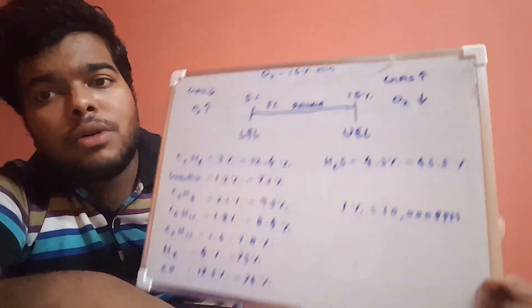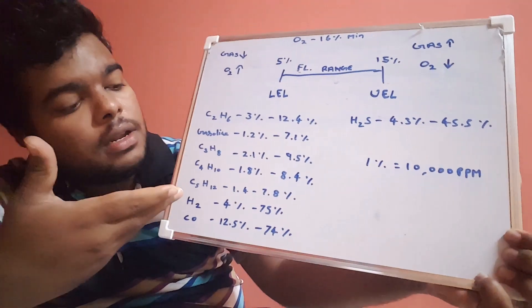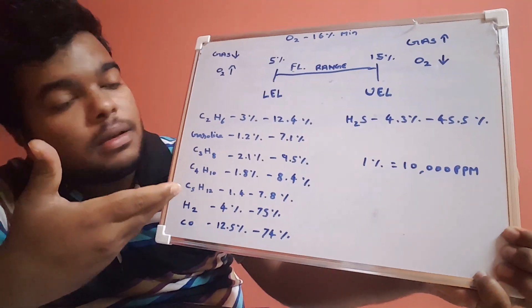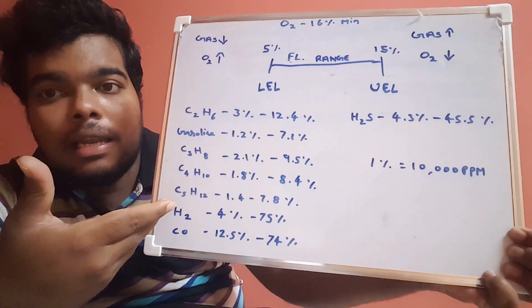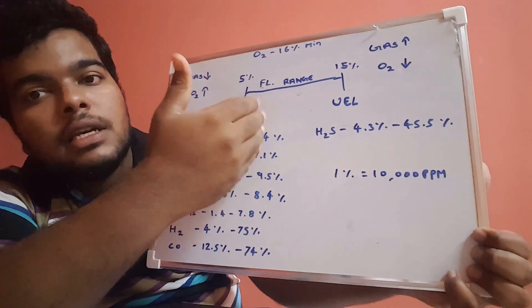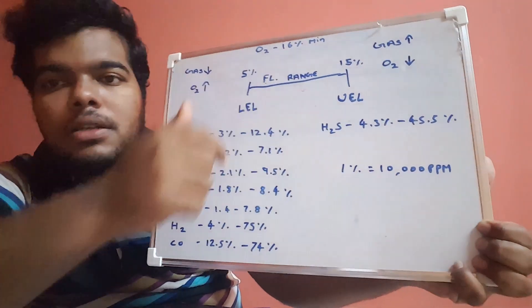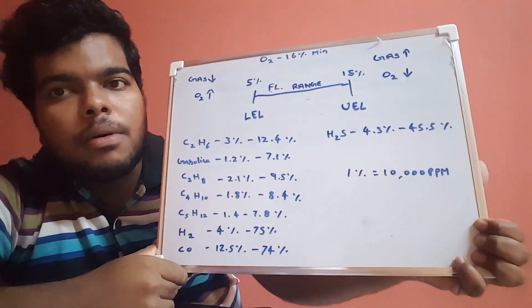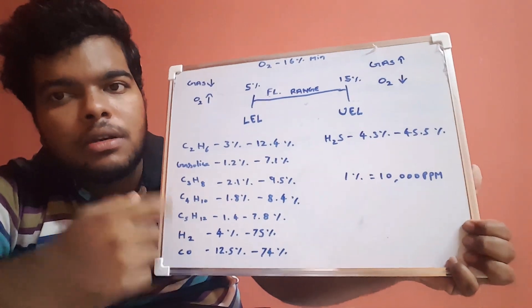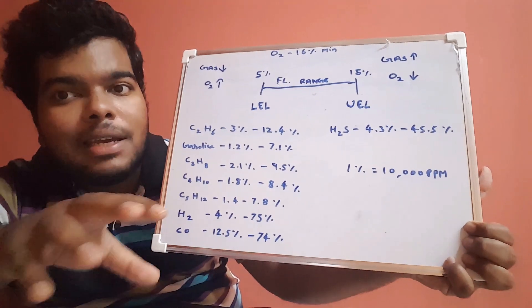I have also given some of the values of oil and gas gases and all these values of LEL and UEL which you can see. Actually, CH4 is methane, which already has 5 to 15 percentage. It's already given in our multi-gas detector. This is the range of the multi-gas detector which is calibrated for the quantity of methane in the air.